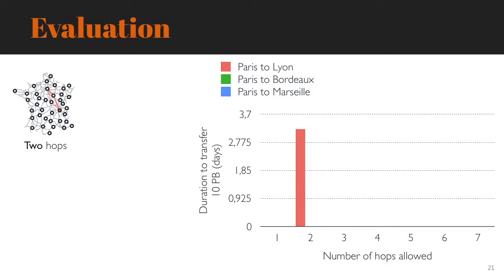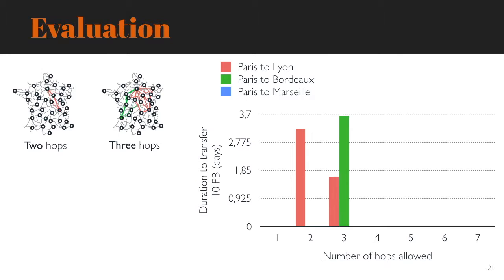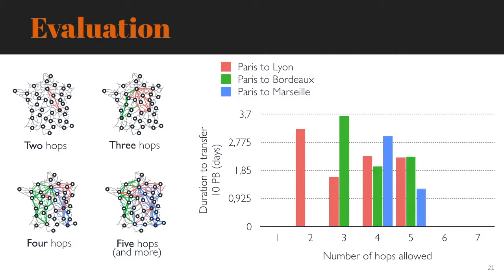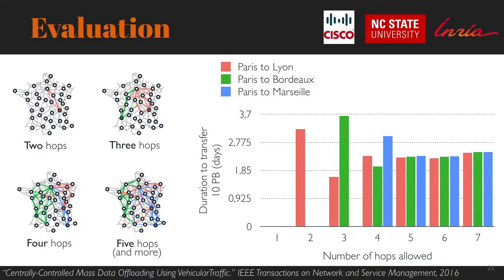If we consider travel paths of three hops or less, Bordeaux is now reachable in addition to Lyon. With additional candidate paths between Paris and Lyon, more vehicles are allocated to that transfer, decreasing its duration. Regarding Bordeaux, too few two- or three-hop paths are available, so this transfer lasts three hours and forty minutes. With four-hop travel paths, Marseille is also reachable, but the number of four-hop logical paths is still limited, and transferring ten petabytes requires almost three hours. Finally, with travel paths of five hops and more, transfer durations become equivalent among all demands, confirming that the vehicle flow allocation is fair in terms of throughput.